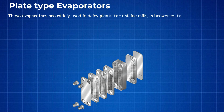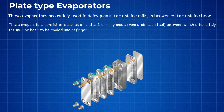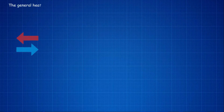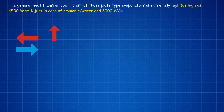Plate type evaporators are widely used in dairy plants for chilling milk and in breweries for chilling beer. These evaporators consist of a series of plates, normally made from stainless steel, between which alternately the milk or beer to be cooled and refrigerant flow in counterflow direction. The overall heat transfer coefficient is extremely high — as high as 4500 W/m²K in the case of ammonia or water, and 3000 W/m²K in the case of R-22 per water.